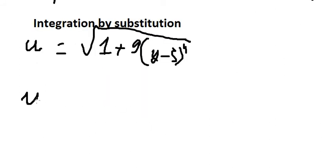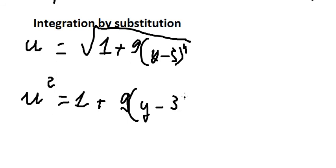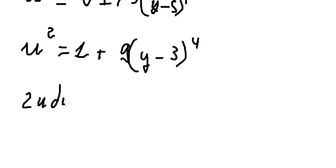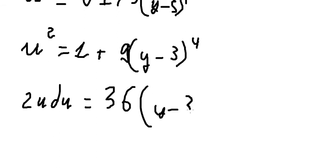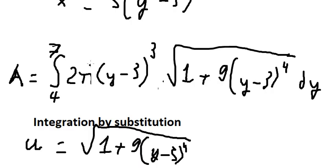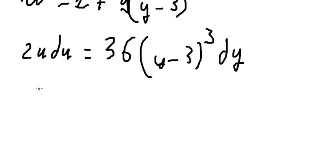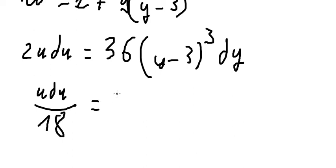We square both sides. Differentiating, we get 2u du equals the first derivative of the inside, which is 4 times 9 — that is 36 — times (y minus 3) to the power of 3, dy. Since we need (y minus 3) cubed dy alone, we divide both sides by 36, giving us (y minus 3) cubed dy equals 2u du over 36, or u du over 18.